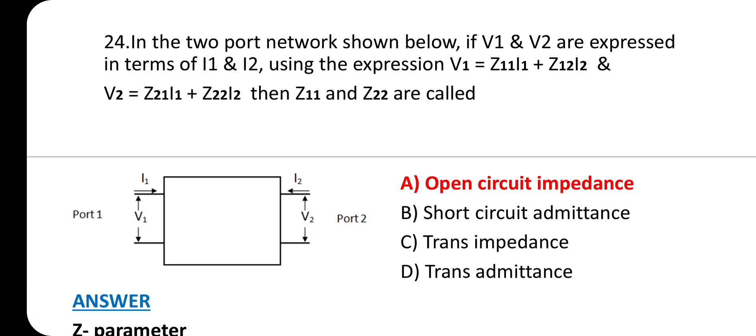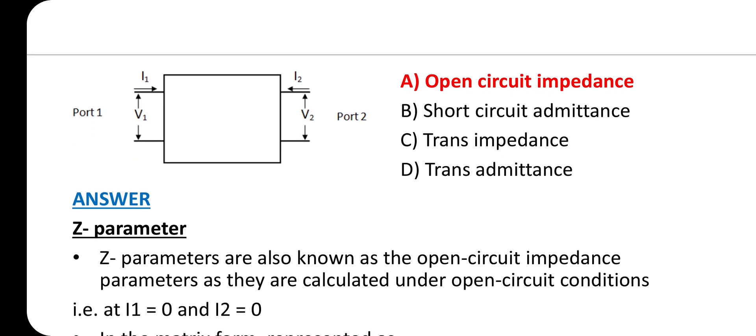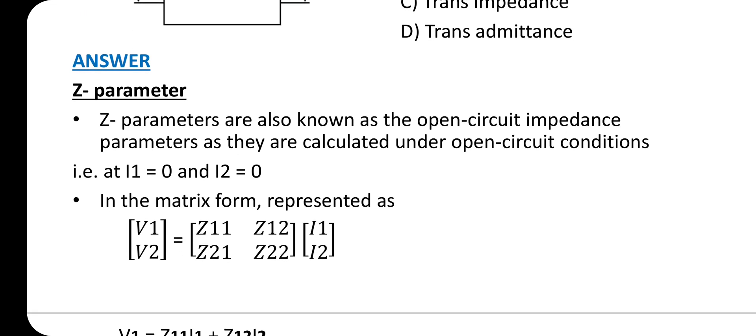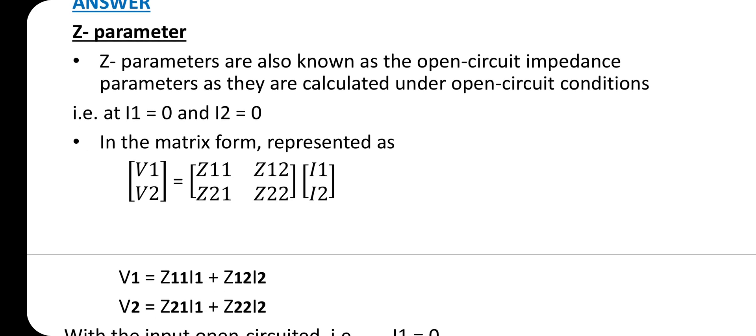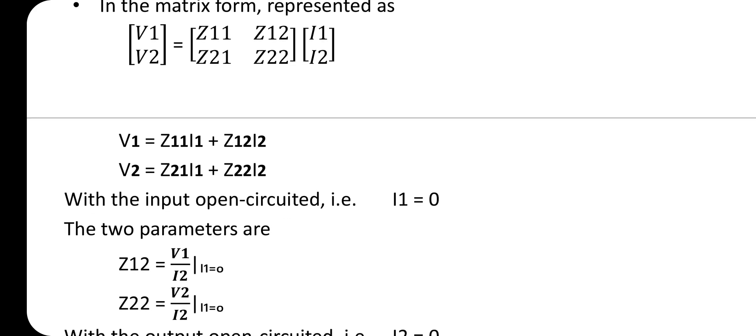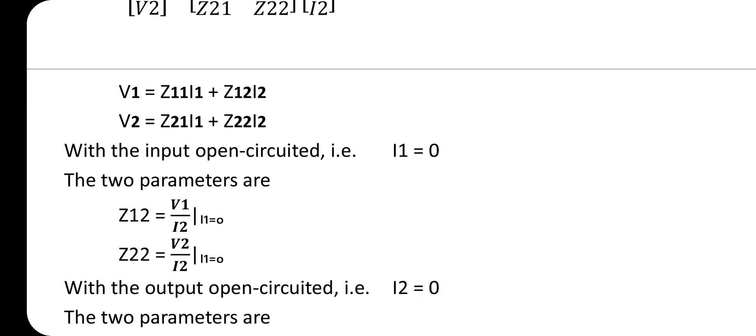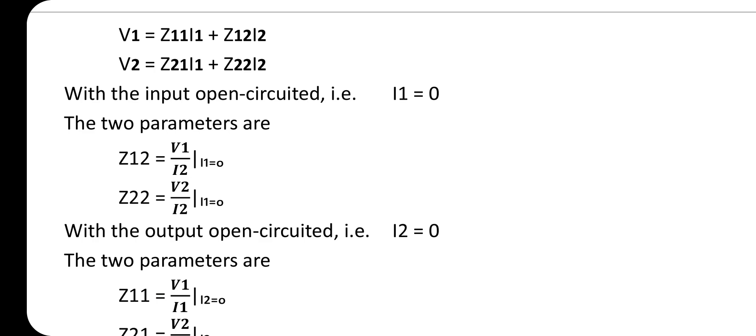Question 24: In the two-port network shown below, if V1 and V2 are expressed in terms of I1 and I2 using V1 = Z11×I1 + Z12×I2 and V2 = Z21×I1 + Z22×I2, then Z11 and Z22 are called? Option A: Open circuit impedance. Z parameters are also known as open circuit impedance parameters as they are calculated under open circuit conditions at I1 = 0 and I2 = 0.